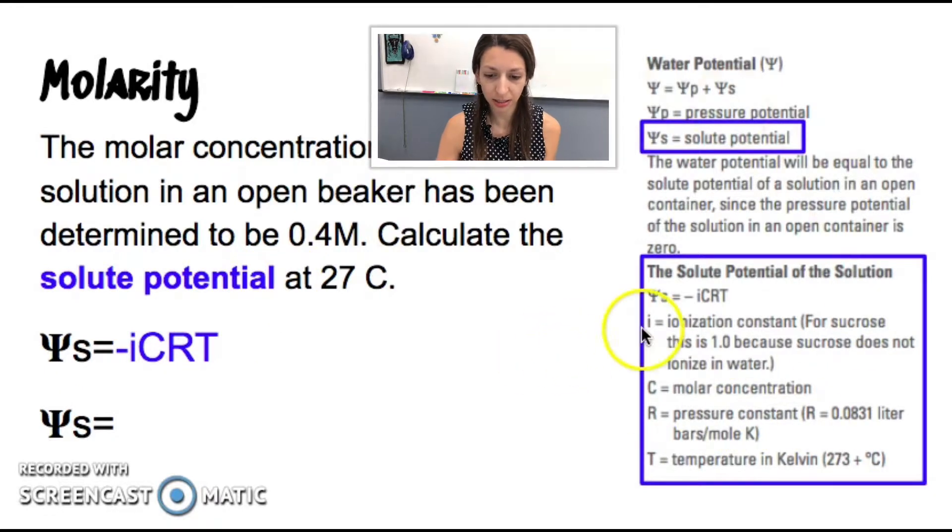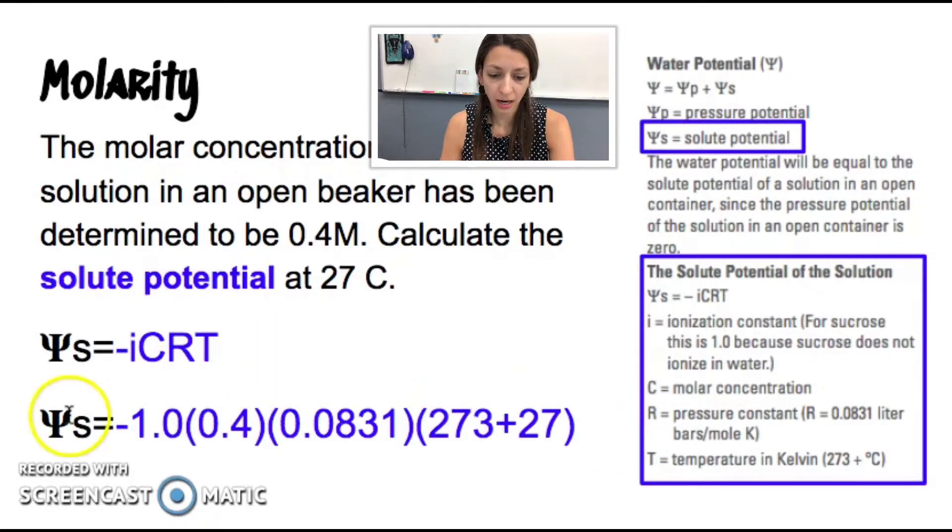So let's look at each one of these. I is the ionization constant. And it tells you for sucrose, this is 1.0 because sucrose does not ionize in water. And generally this will be given. You won't really have to calculate the ionization constant for the most part. I've never seen a student have to do this or heard of a student having to do this on an exam. So let's plug it in. Don't forget that negative.